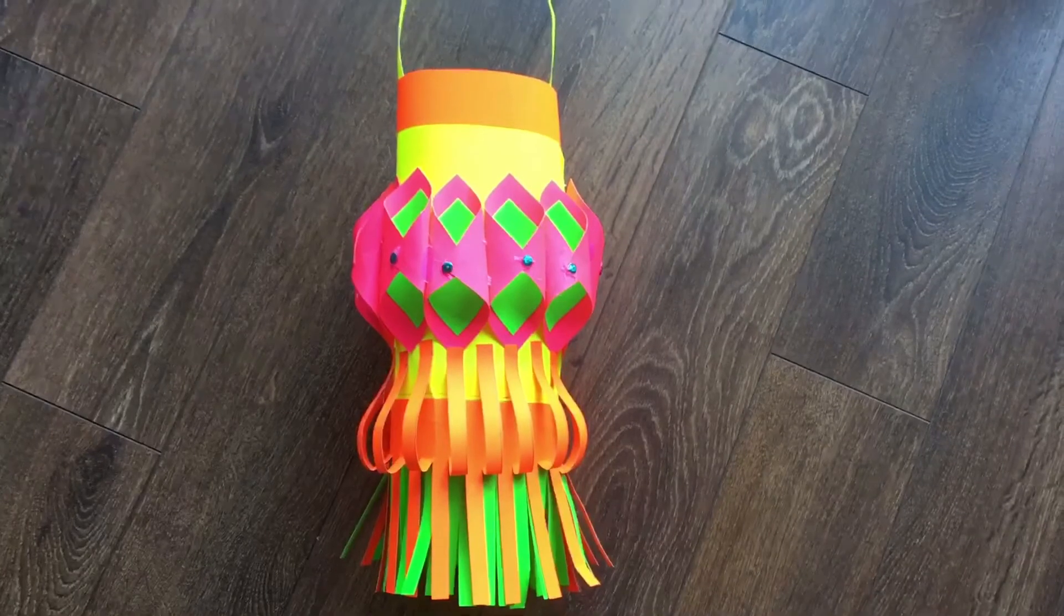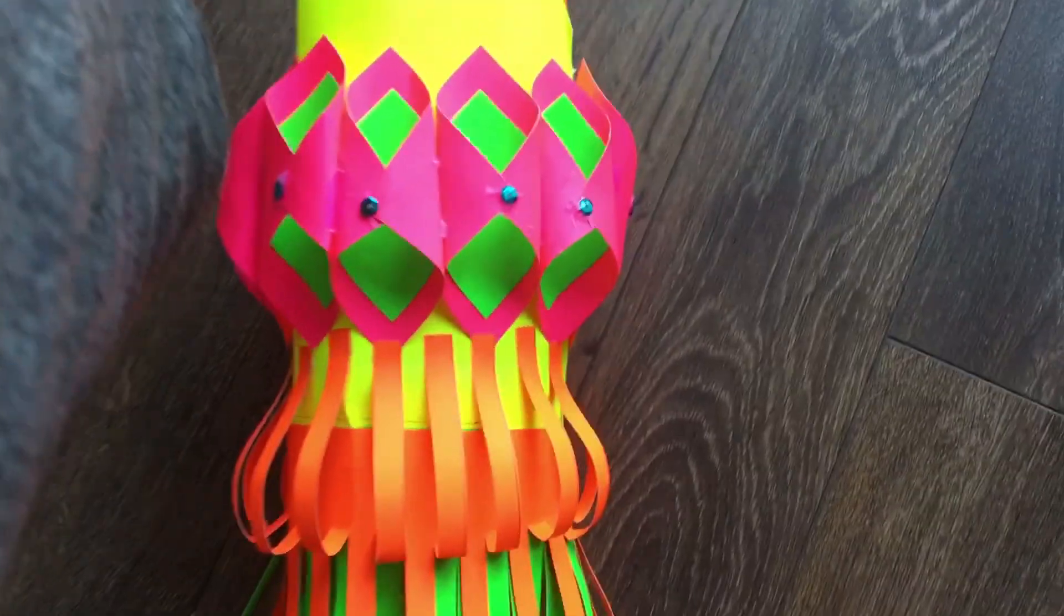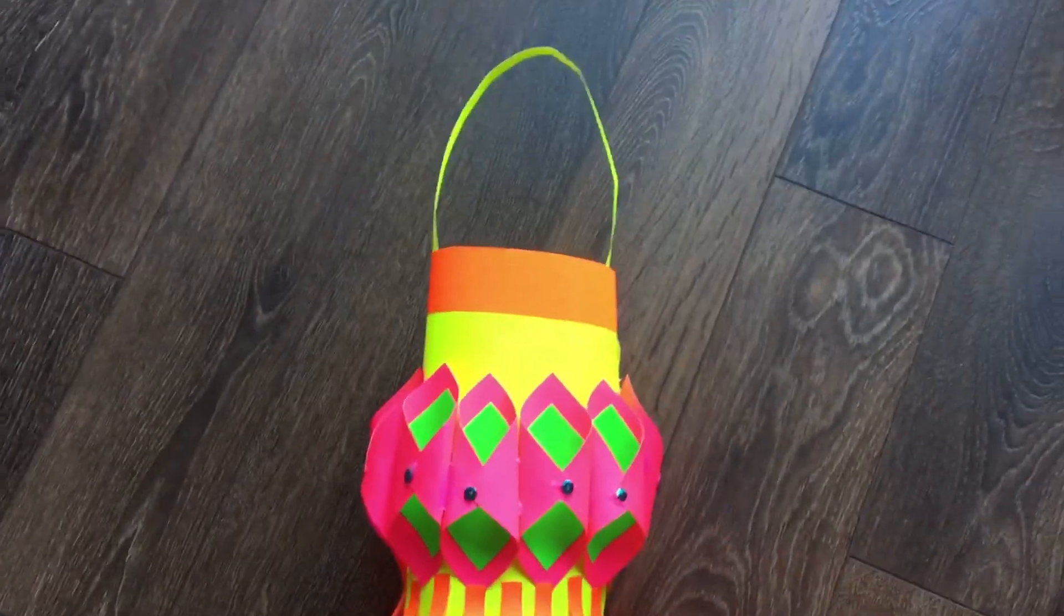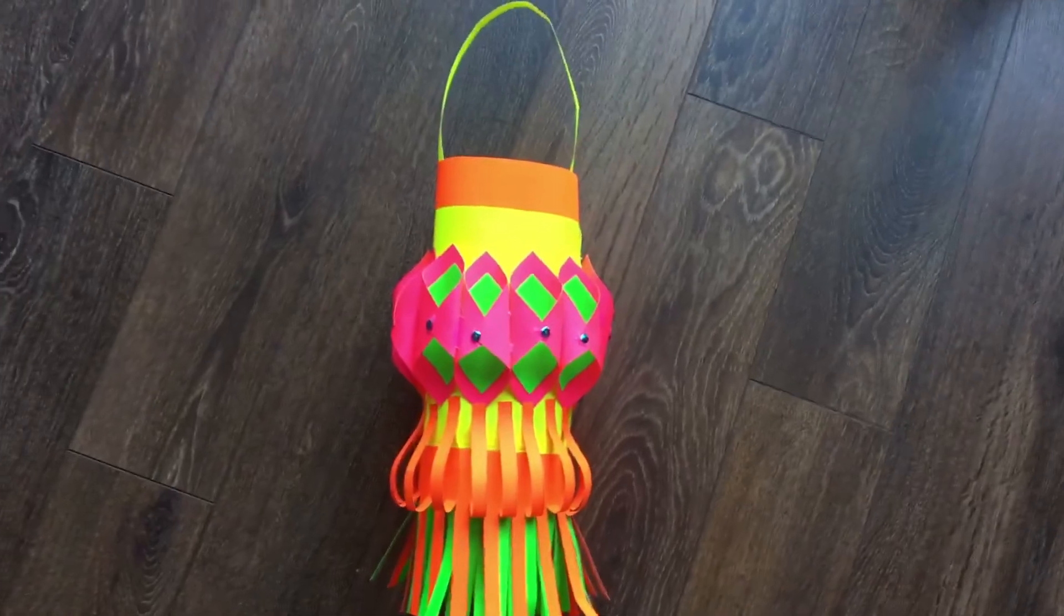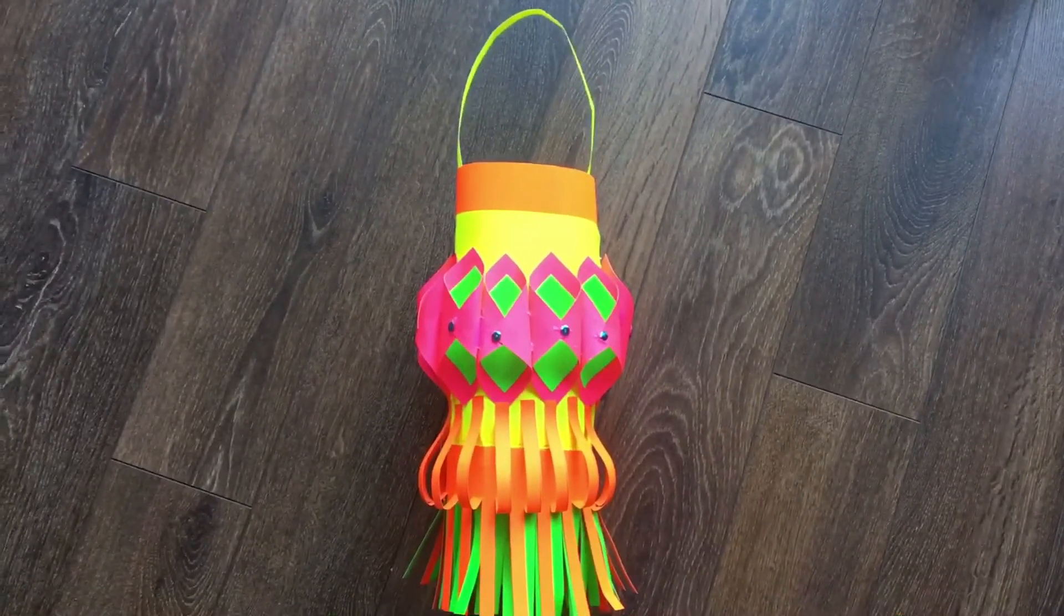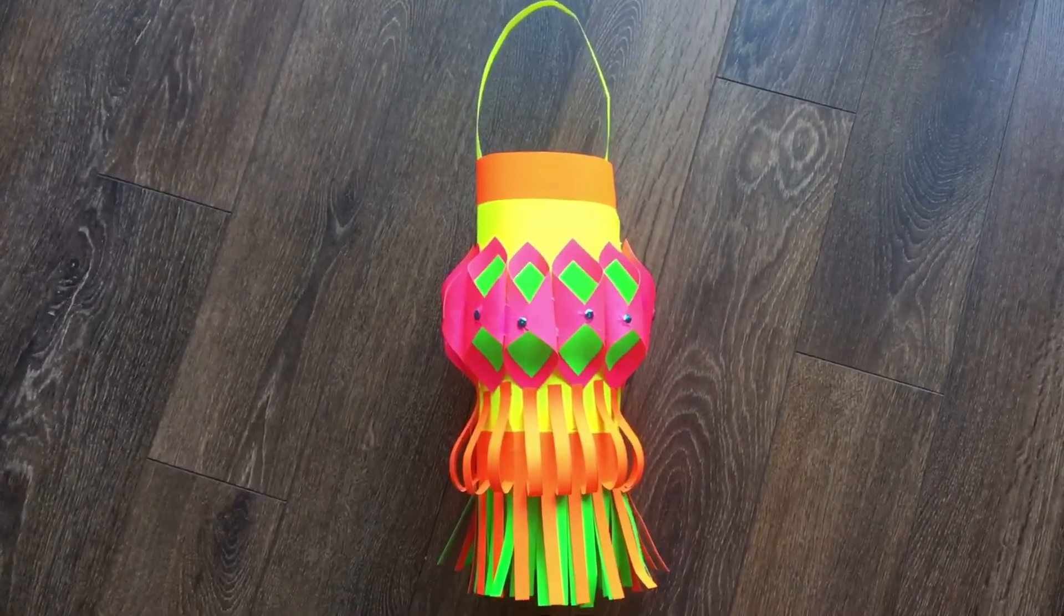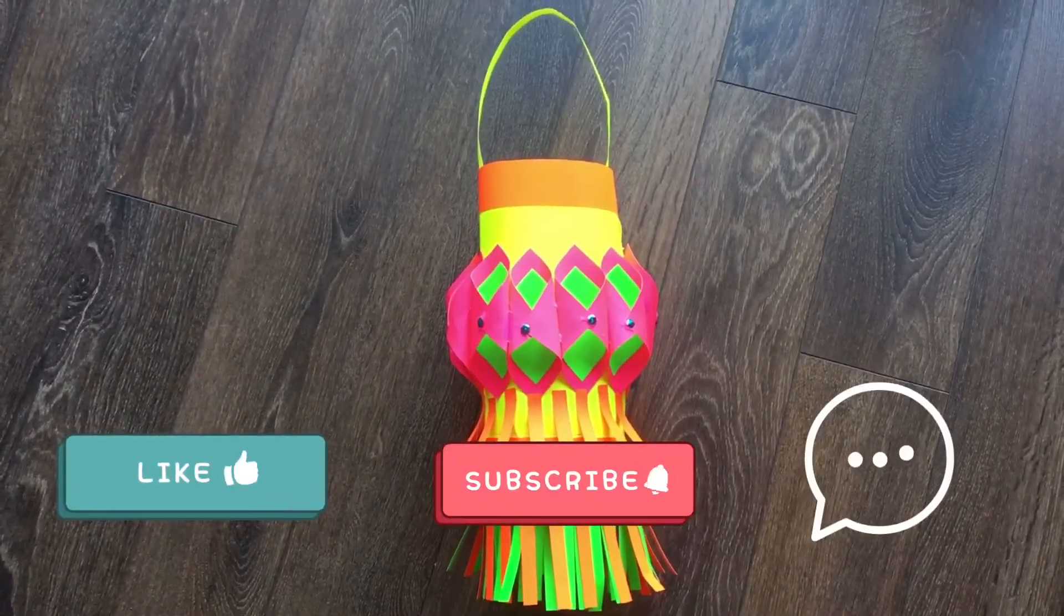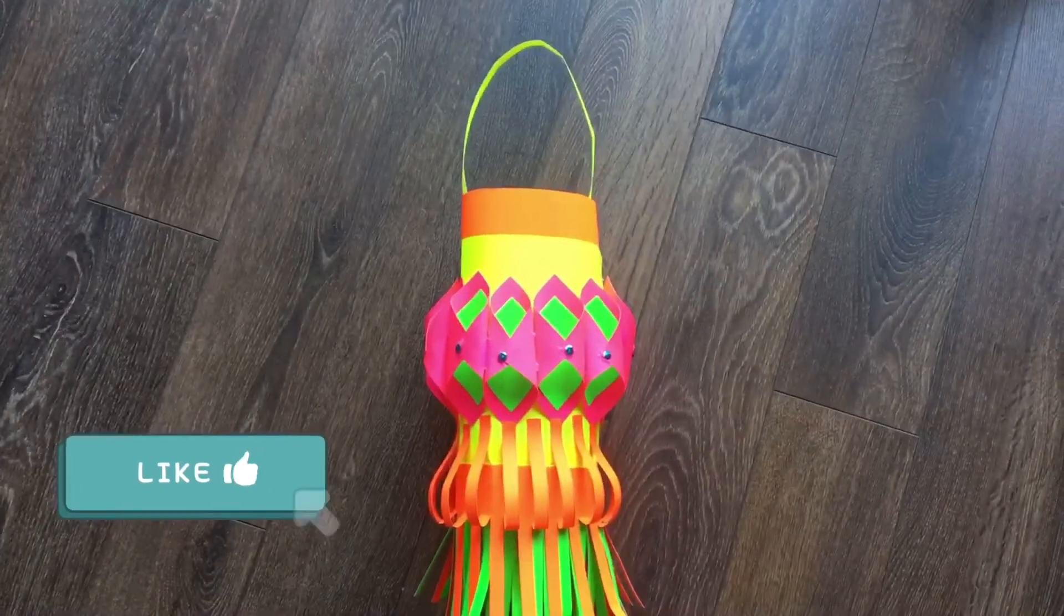So this is how the lantern turned out. It looks really good. I also enjoyed making it a lot and I hope you guys enjoyed making it as much as I did too. I also added an orange strip at the top and a yellow piece of paper to hang. I hope you guys enjoyed this video and don't forget to like, comment, and subscribe below. I'll see you guys next time. Bye.